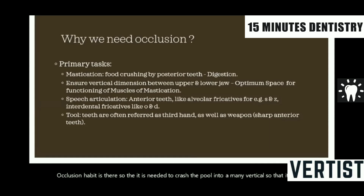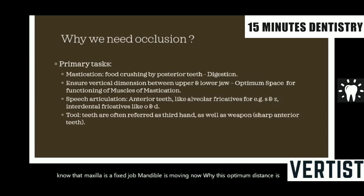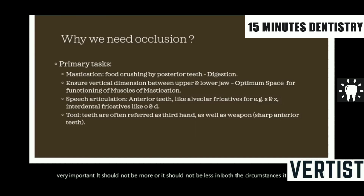Another important primary task of occlusion is to maintain the vertical dimension — the optimum distance between the mandible and the maxilla. The maxilla is a fixed jaw and the mandible is moving. This optimum distance is important because if it is not maintained, the muscles of mastication won't be able to generate enough contraction to create the occlusal forces to crush the food. So proper vertical dimension is very important — it should not be more or less, as in both circumstances it is going to cause pain or discomfort to the patient.